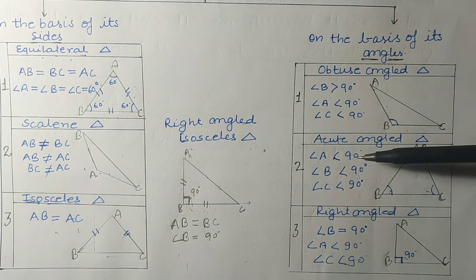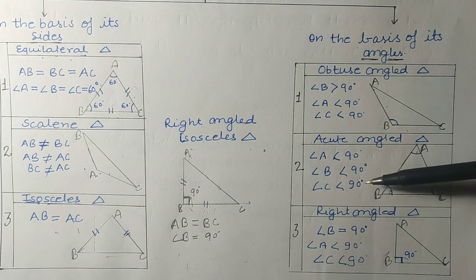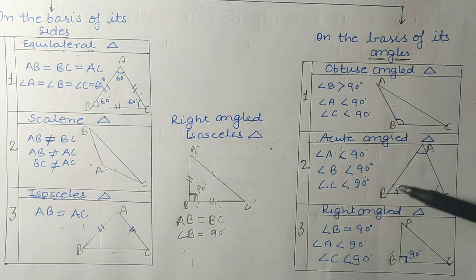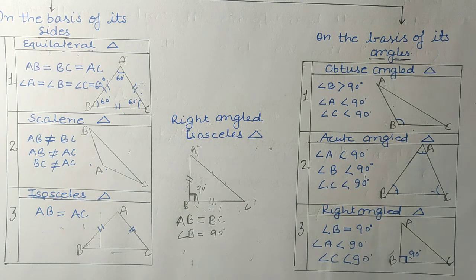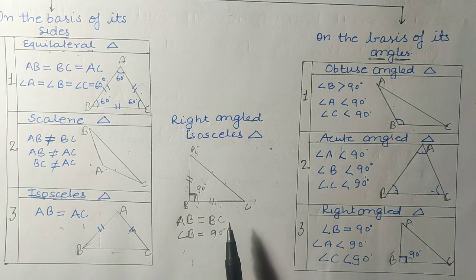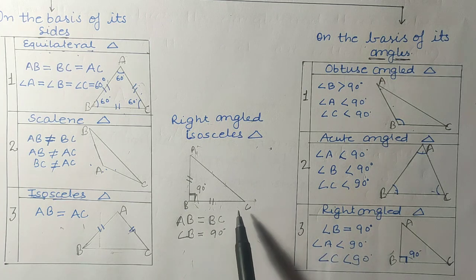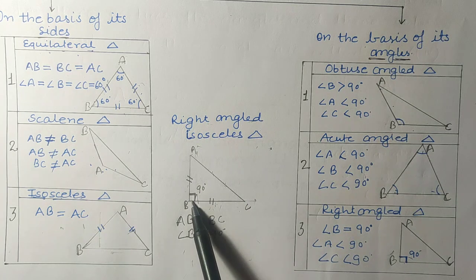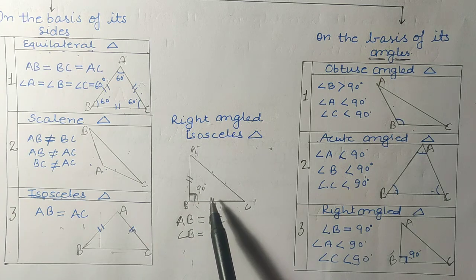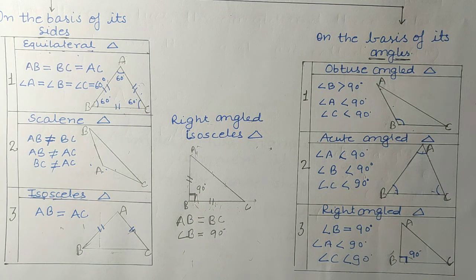In an acute angle triangle, all angles are less than 90 degrees. In a right angle triangle, one angle is exactly equal to 90 degrees. There is also a combined type: the right-angled isosceles triangle, in which the perpendicular and base are equal and one angle is 90 degrees.